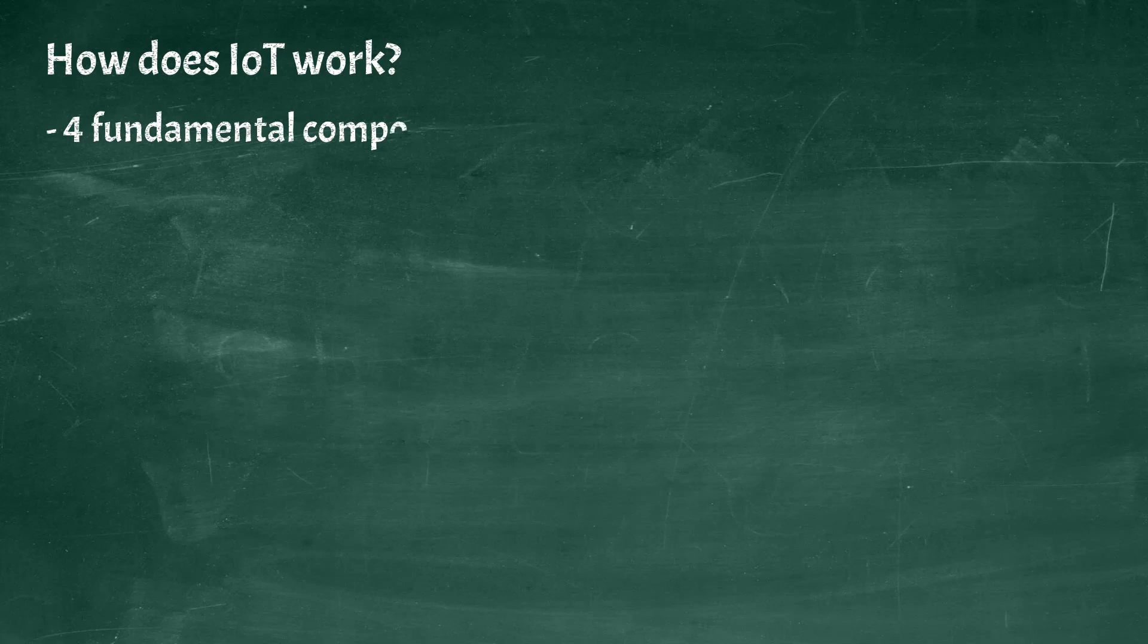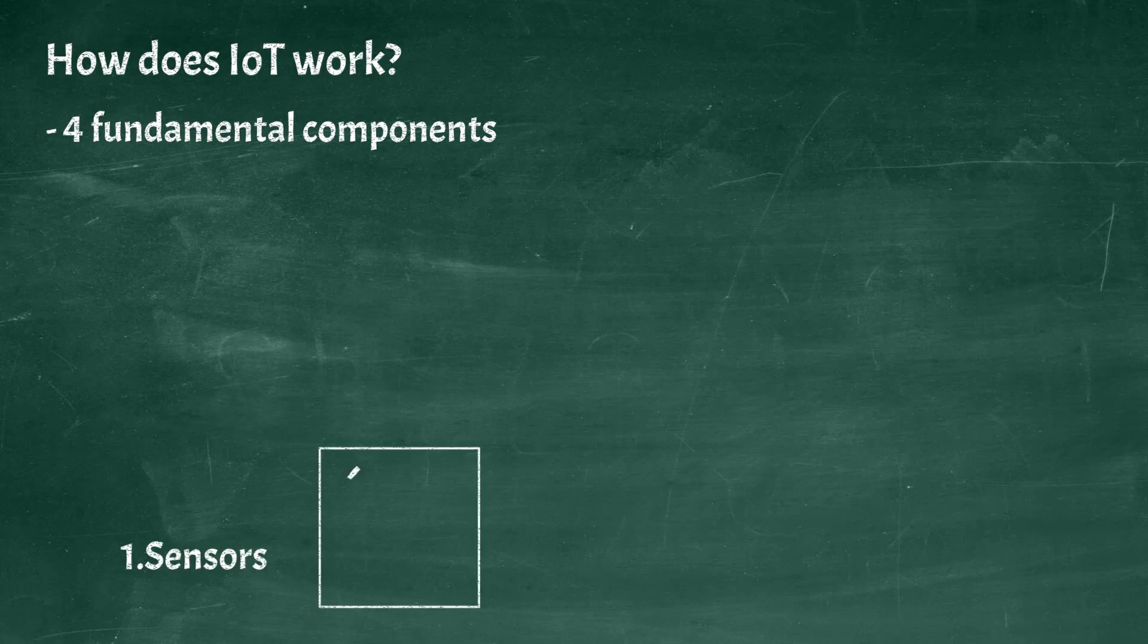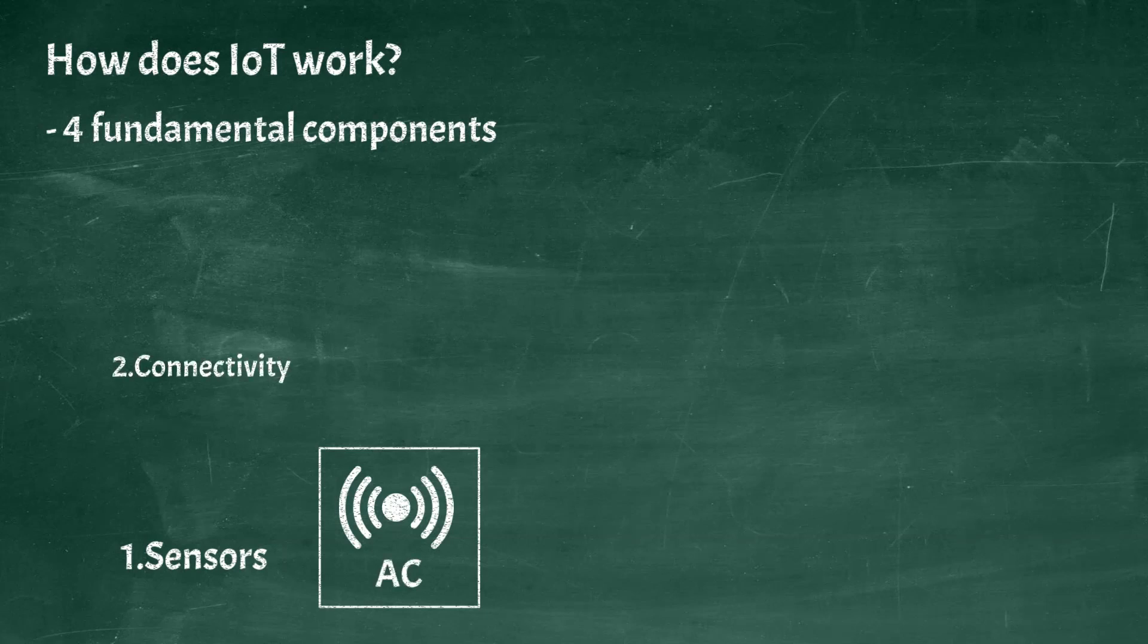The first component is sensors. Sensors help in collecting very minute data from the surrounding environment, for example temperature monitoring sensors on air conditioners. The second component is connectivity. Next, that collected data is sent to the cloud infrastructure, but it needs a medium for transport.